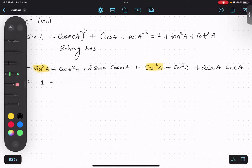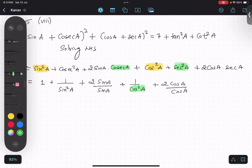So it will become 1 upon sin²A, plus 2sinA upon sinA. This will become 1 upon sinA. Thus sec will become 1 upon cos²A, and plus 2cosA upon cosA. Sec becomes 1 upon cos. Now cancel cos. Cos cancel.